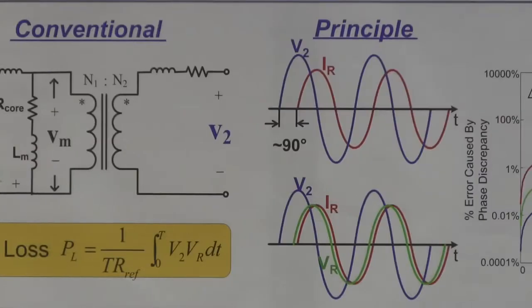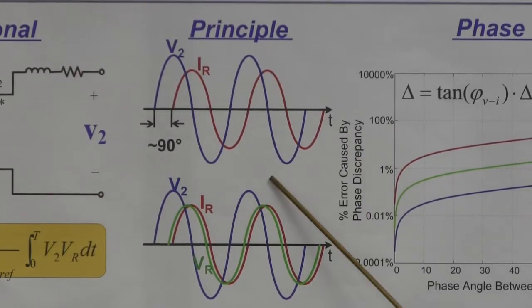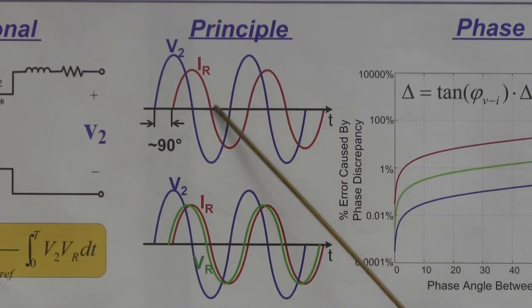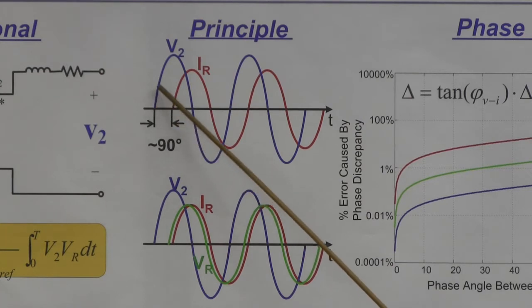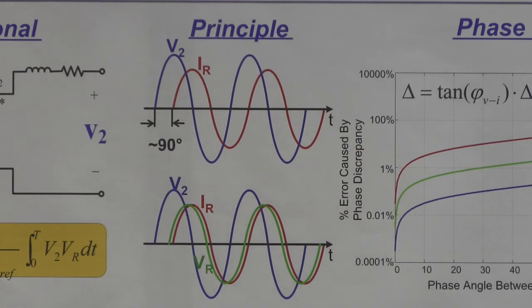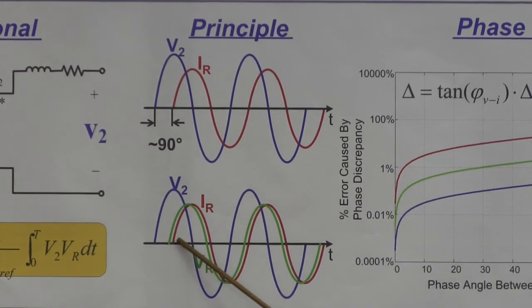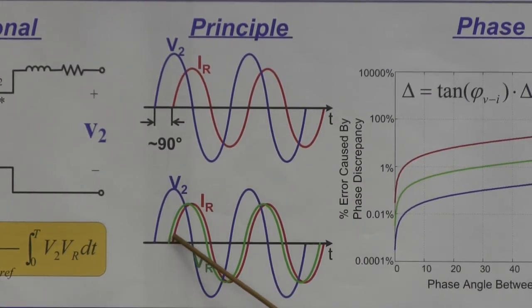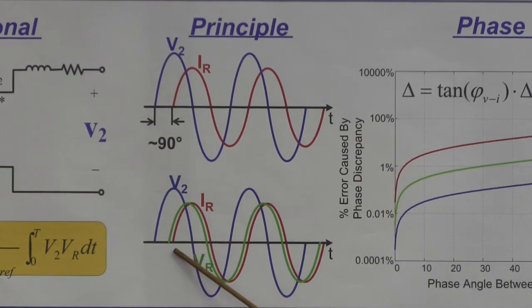But it is highly sensitive to phase error. This shows the typical waveforms. The voltage will be about 90 degrees phase leading the current. If there is a small phase discrepancy of these two waveforms, this small phase discrepancy will cause severe error.